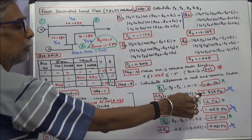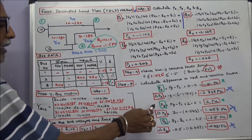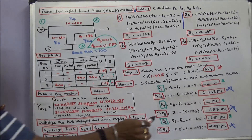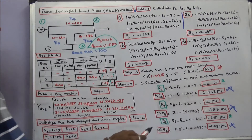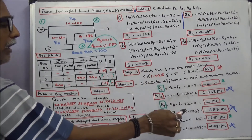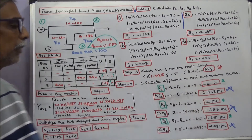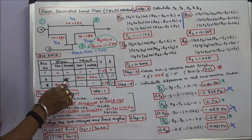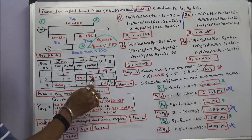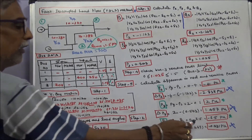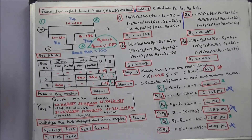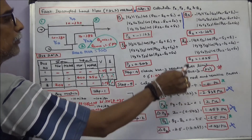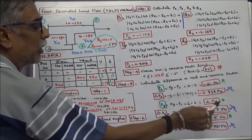P3 equals PG minus PL. Generation is 200 megawatts, that is 2 per unit, minus the calculated value of 0.543, giving delta P3 equal to 1.457 per unit. Q2 equals QG minus QL. QG is 0, QL is 250 megavolt ampere reactive, that is 2.5 per unit. Delta Q2 equals minus 2.5 minus the calculated minus 2.269, giving minus 0.231 per unit.